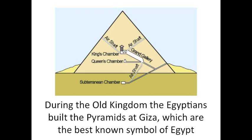During the Old Kingdom, the Egyptians built the Great Pyramids at Giza, which are the best-known symbol of Ancient Egypt. The pyramids were tombs for the rulers — the pharaohs — in which they preserved their bodies and everything else they would need to live their new life in the afterlife. Construction of the pyramids required enormous funding, planning, and organization, and they're a true testament to the strength of this Egyptian civilization.